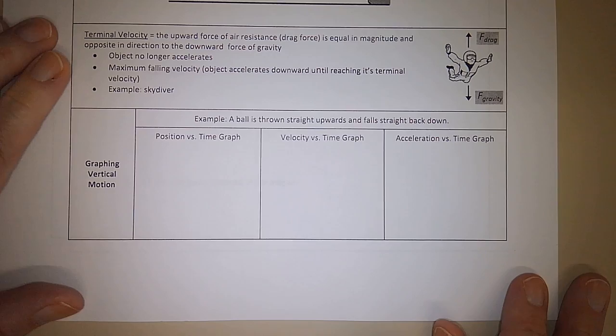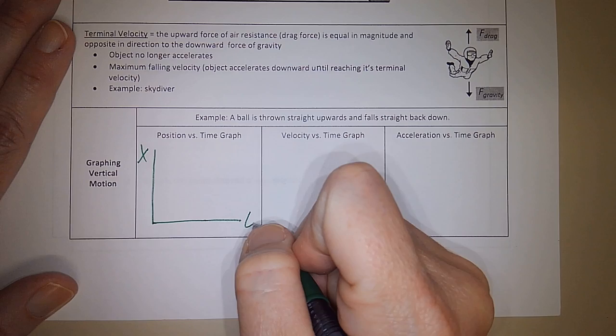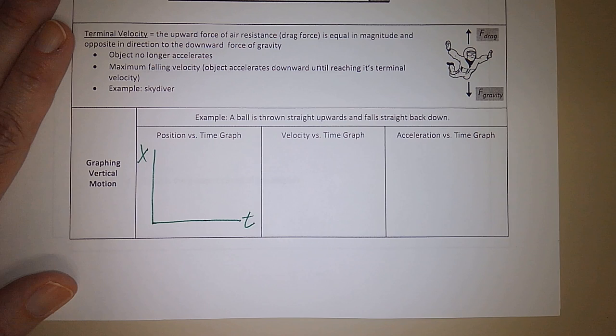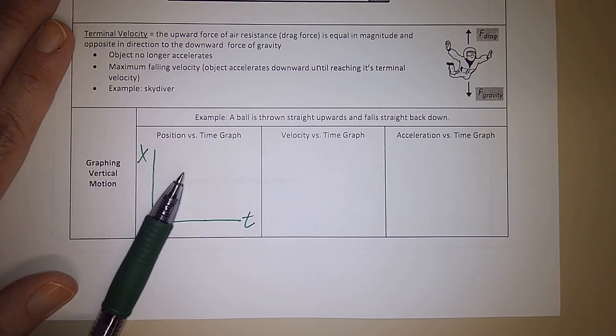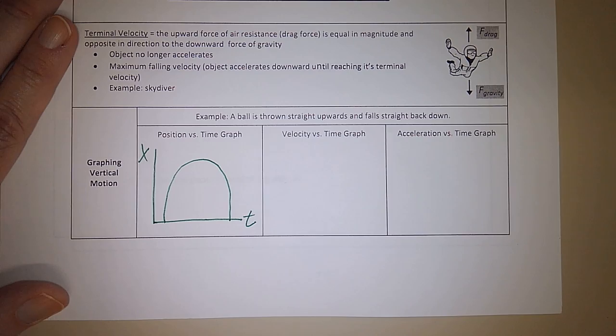When we have to graph this, if a ball is thrown straight up and then falls right back down to the exact same spot, your position time graph is actually kind of easy. When you throw something up, it slows down until it stops and then it speeds back up, but in the negative direction. It goes up, zero, down.